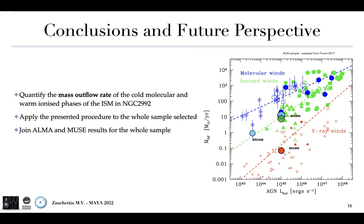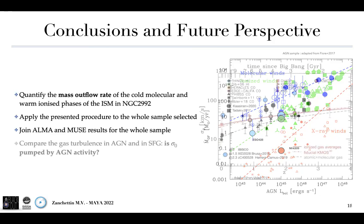To conclude, what we want to do next is to quantify the mass outflow rate both for the cold molecular and warm ionized phases of the interstellar medium in NGC 2992, apply the presented procedure to the full sample selected, joining ALMA and MUSE results for the full sample, and compare our results with a sample of AGN drawn from literature, such as the one from Fiore et al. 2017. This includes a plot of the mass outflow rate as a function of bolometric luminosity for the molecular, ionized, and X-ray winds.